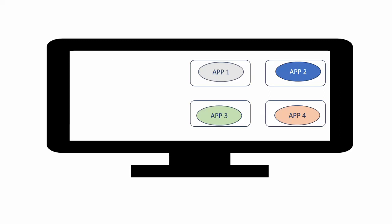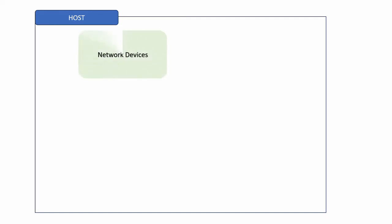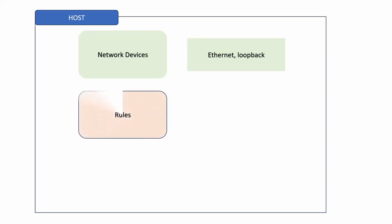But what exactly do I mean by networking resources? While that list is an exhaustive one, there are three key resources that matter in the world of network namespaces. The first one is the set of network devices, such as the Ethernet device and the loopback device. The second one is what we call IP tables — a mechanism provided by the kernel that allows us to set rules that determine what packets can come in through the network into the host and what packets can go out of the host into the network.